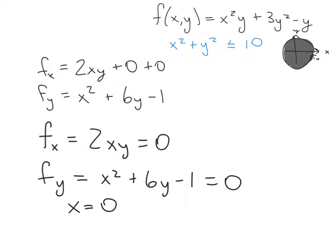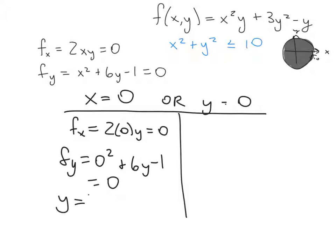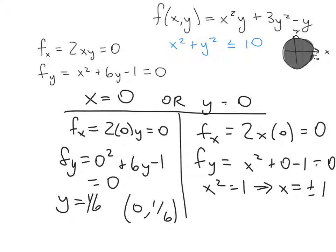Since 2xy = 0, either x = 0 or y = 0. This sets up a chart to find solutions satisfying both equations simultaneously. If x = 0, then f_y = 0 + 6y − 1 = 0, so y = 1/6, giving the critical point (0, 1/6). If y = 0, then f_y = x² − 1 = 0, so x = ±1.